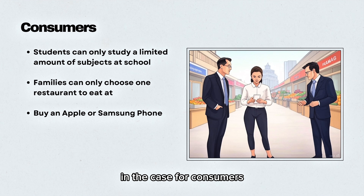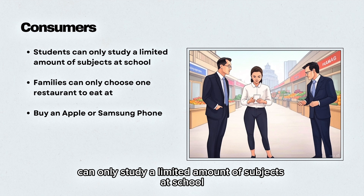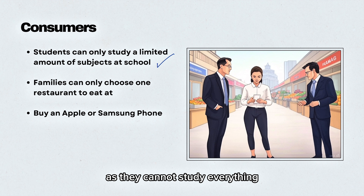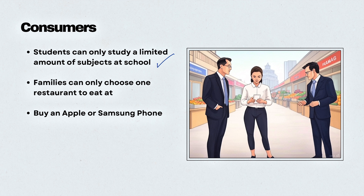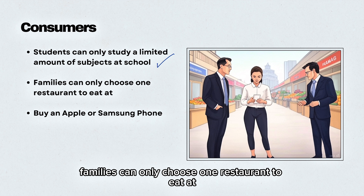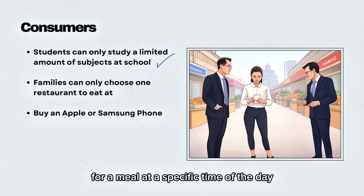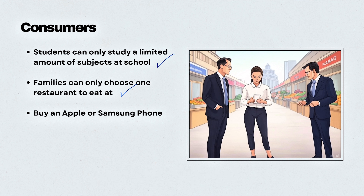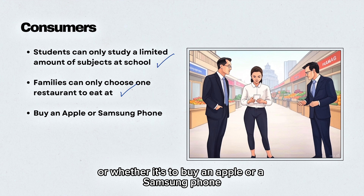In the case for consumers, students can only study a limited amount of subjects at school as they cannot study everything. Families can only choose one restaurant to eat at for a meal at a specific time of the day, or whether it's to buy an Apple or a Samsung phone.